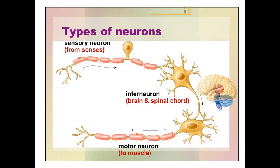Then what is an interneuron? This is another neuron which carries information or nerve impulse between the sensory neuron and the motor neuron. It acts as an intercommunicating or association neuron, simply transferring information from the sensory neuron to the motor neuron.